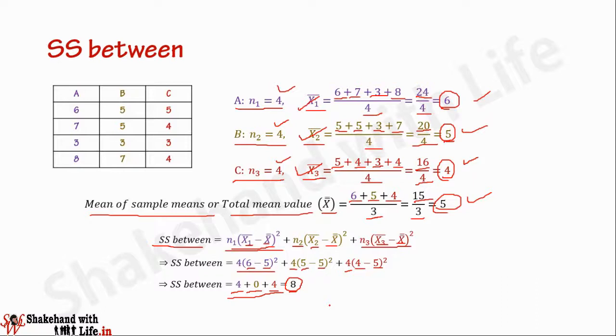This is how we calculate the sum of squares for variance between the samples when we have three samples. Similarly, if we have more than three samples — say m number of samples — we calculate it in the same way. In my next video I'll explain how to calculate the sum of squares for variance within samples.